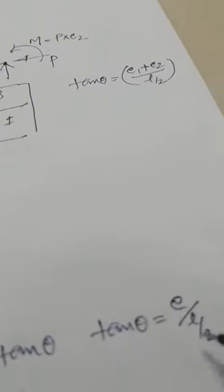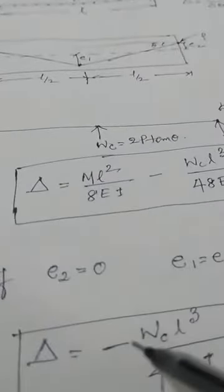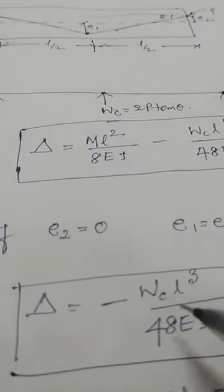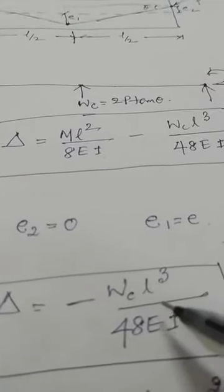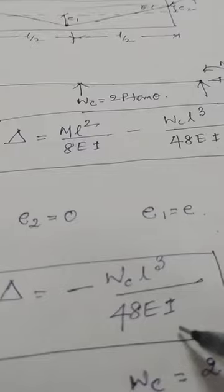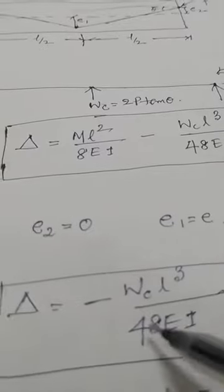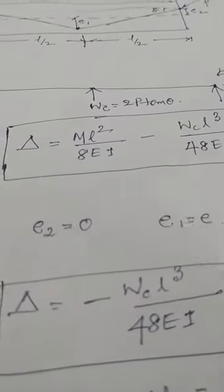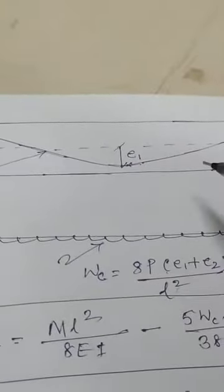When e2 is zero, tan θ will simply be e divided by L/2. Because there is no moment M, only Wc exists, and the formula is Wc·L³/(48EI). The negative sign indicates this will create an upward deflection.